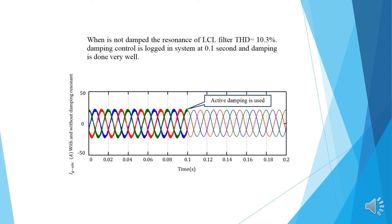In this case, damping isn't applied until 0.1 second. The THD has been over 10%. After applying damping in the system, the grid current status has been improved and damping is done very well.